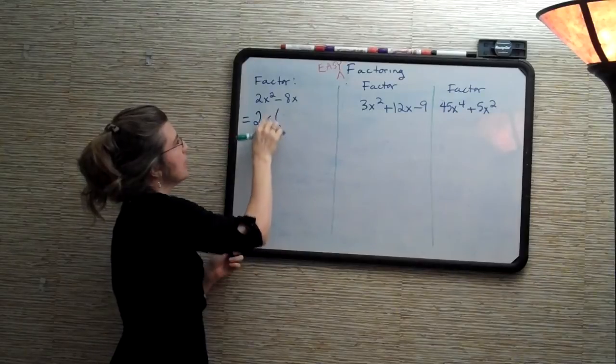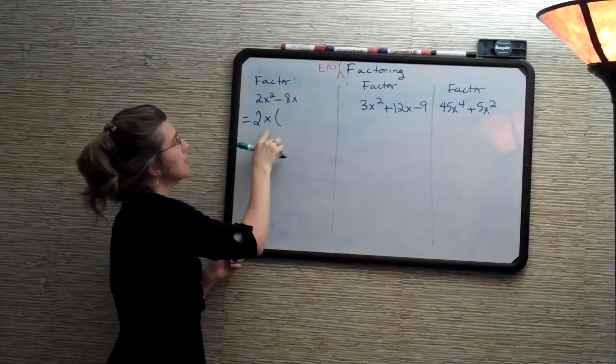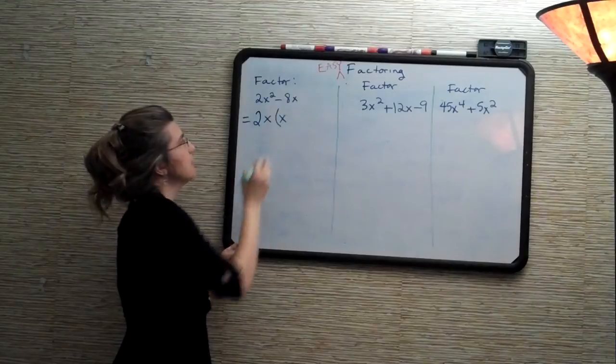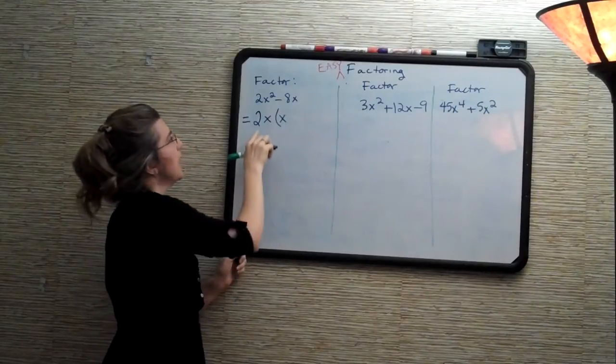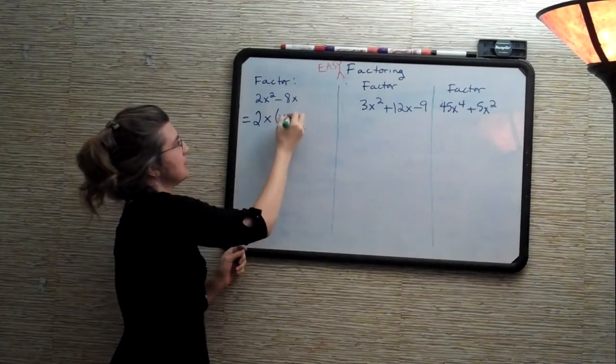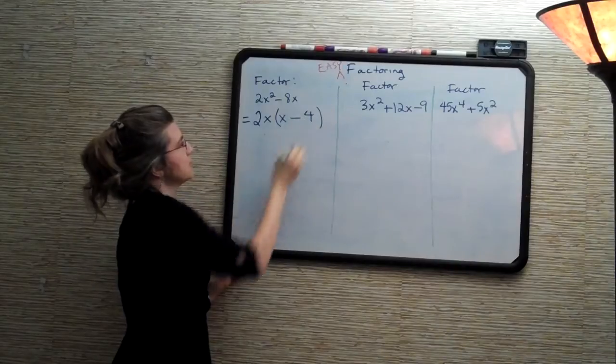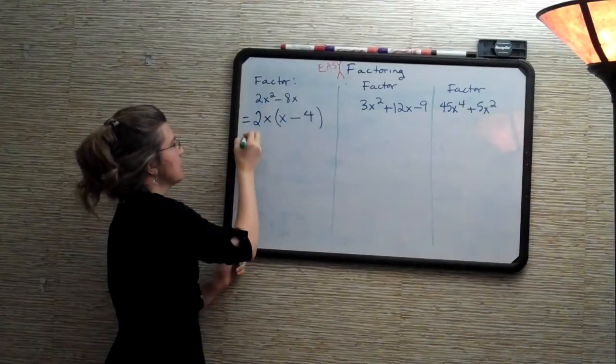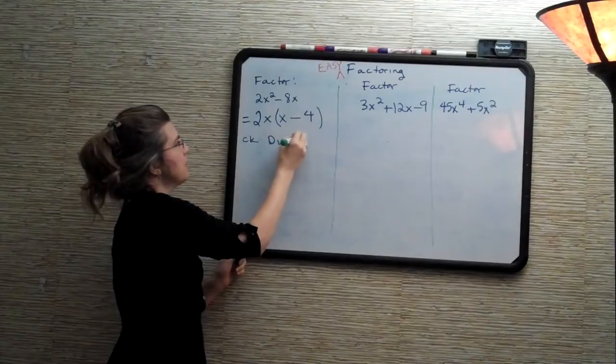So 2x squared times what? Sorry, 2x times what is 2x squared? 2x times x is 2x squared. And 2x times what is minus 8x? 2x times minus 4 is minus 8x. We can check by what is called the distributive property.